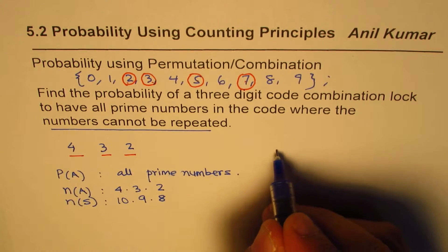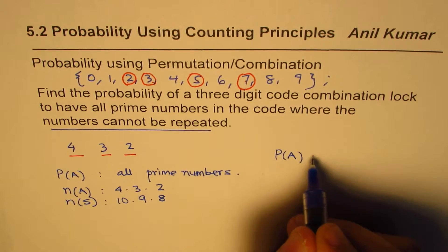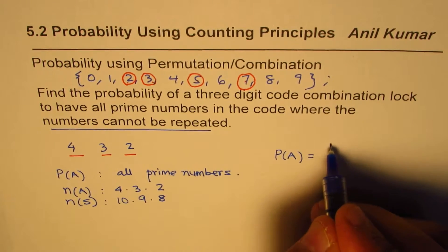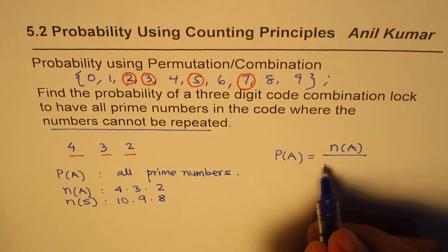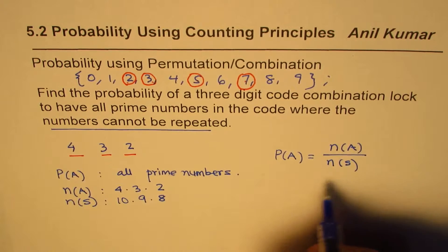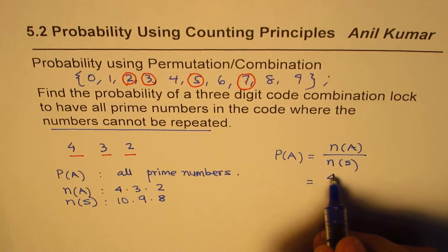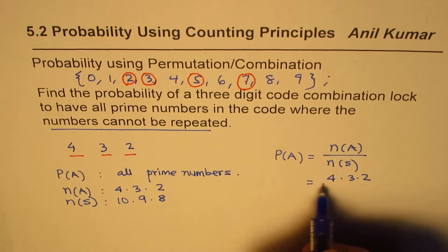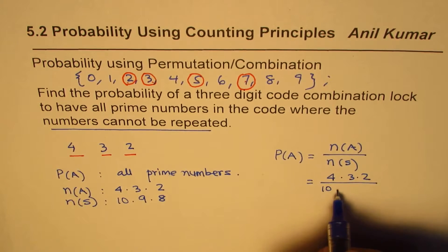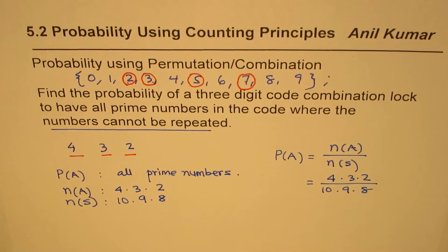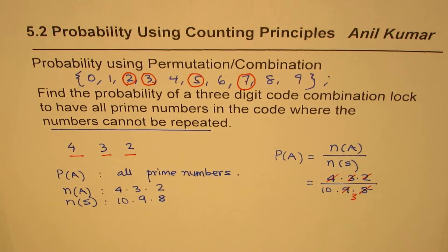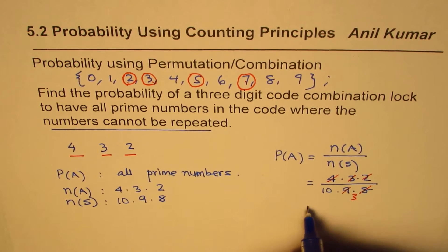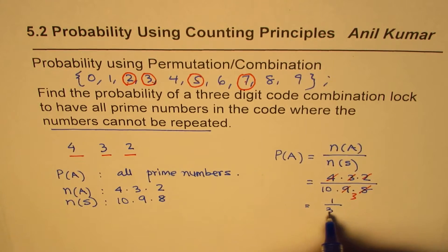And therefore, we can find the probability for this event as the ratio of favorable outcomes to the total number of outcomes. So this ratio is 4 times 3 times 2 divided by 10 times 9 times 8. So you could simplify this. 4 times 2 is 8, 3 goes 3 times, and you get your answer as 1 over 30.